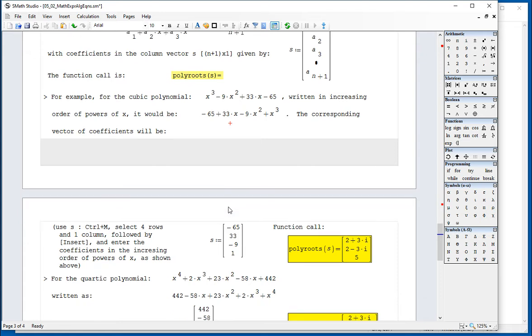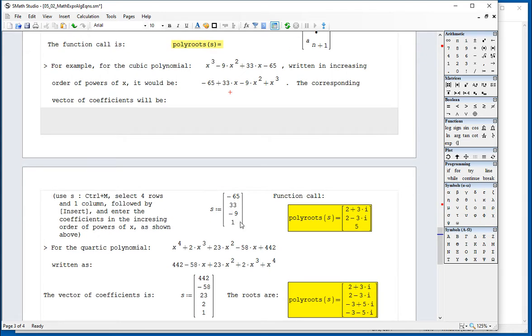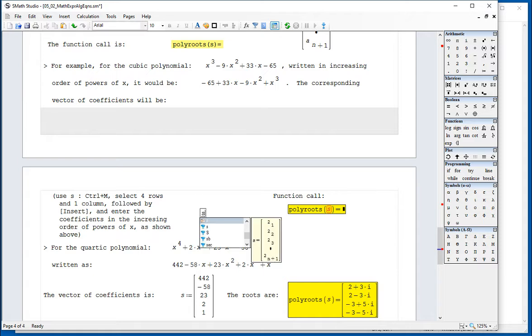Then you're going to form your vector. To form the vector, this is how you're going to do it. It's called the vector s, column.